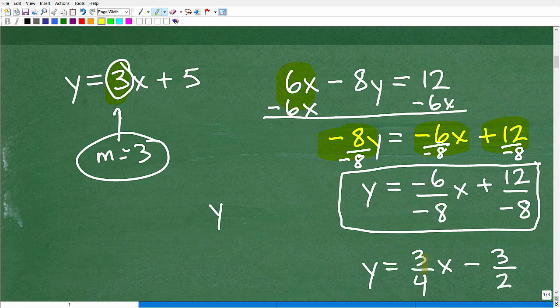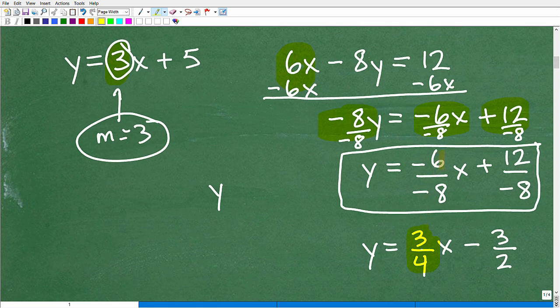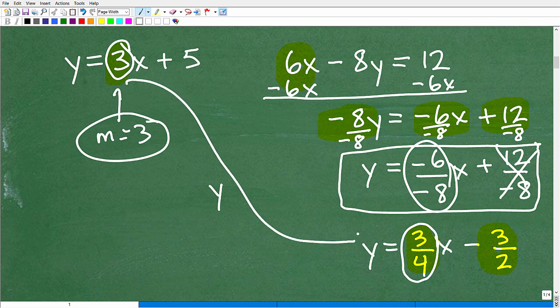This negative 6 over negative 8, that's going to be positive 3 fourths. Okay, let me move this down a little bit. Okay, so that's going to be positive 3 fourths when I clean this fraction up. And then here, this 12 over negative 8 is negative 3 halves. It doesn't make a difference what this is. That doesn't affect our answers. We're concerned about what the slope is. And the slope of this line is 3 fourths. And we can clearly see 3 fourths is not 3. So what does that tell us? Are these lines parallel? The answer is a resounding no, they are not parallel.